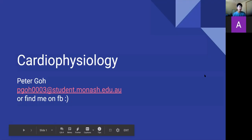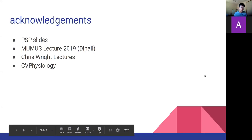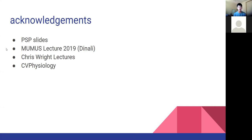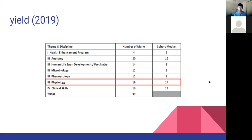So to do with cardiophysiology, I'll acknowledge how I've made these slides. PSPs have helped a lot, thanks to last year's lecture, Denali, as well as Chris Wright's lecture and CV Physiology, which has been really helpful - it's a good resource if you want to check that out. In terms of yields from last year, from our exam 2 at the end of the year, physiology took up a fair chunk, nearly equal to anatomy, so it's fairly high yield. There are only a few key concepts that you really need to grasp.